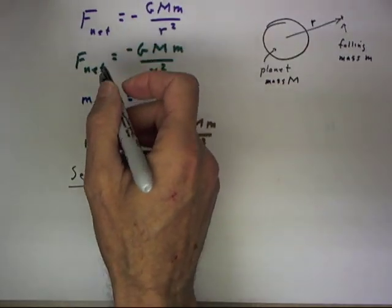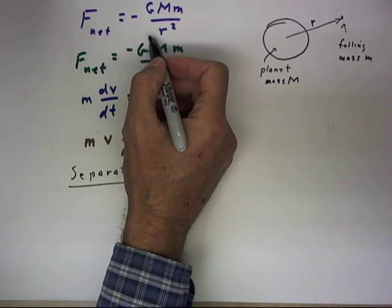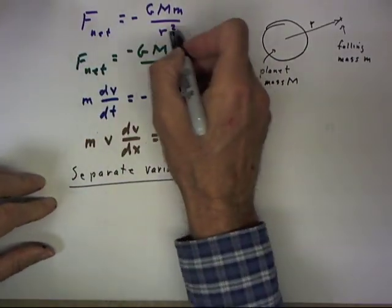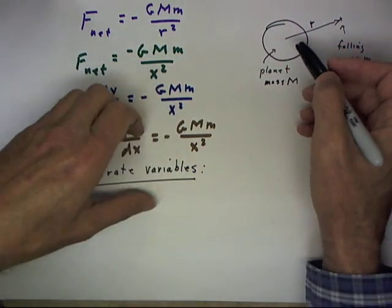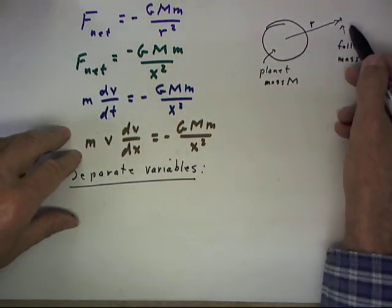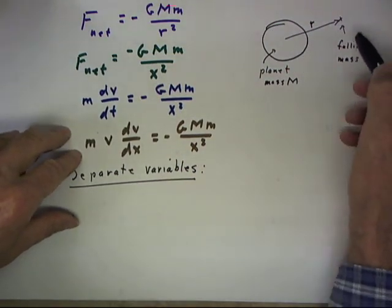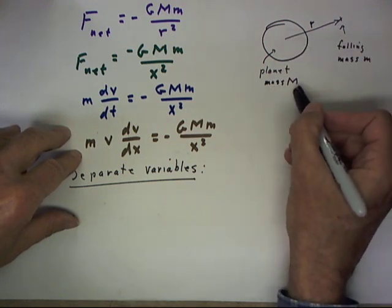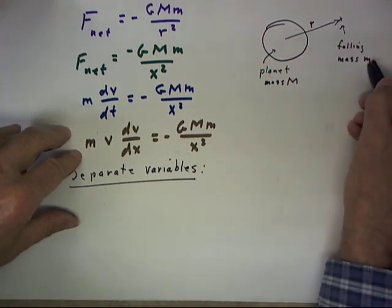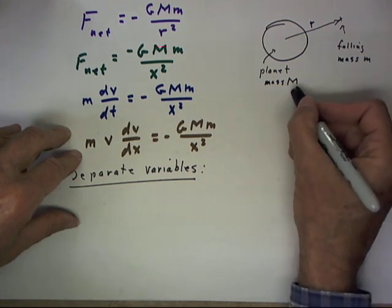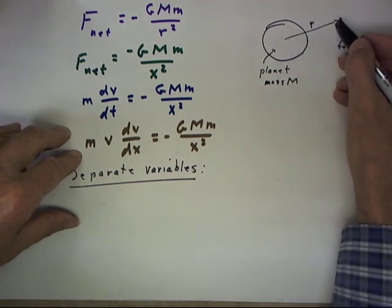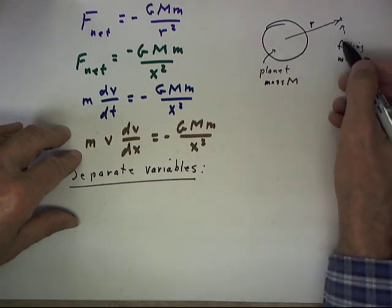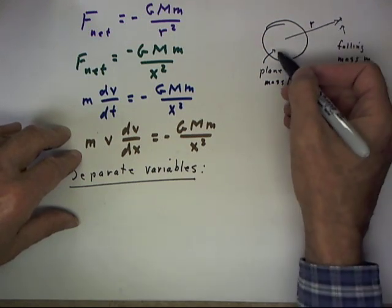Let's consider another example with a more substantial net force function. This function describes the net force on an object of mass m which is falling toward a planet of mass big M. So the falling object has mass little m, the planet has mass big M, and R is going to represent the distance, the changing distance of the falling object from the planet.